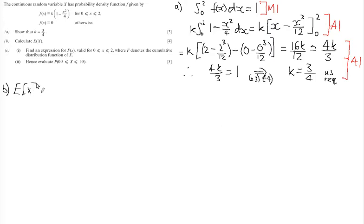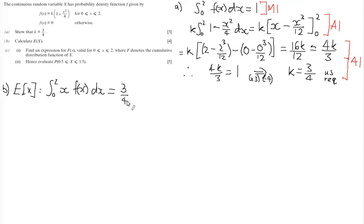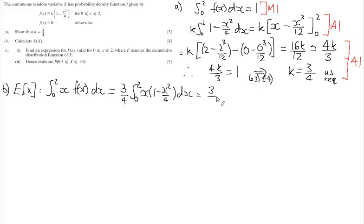Part B wants us to calculate the expectation of X. The expectation of X is found by integrating x multiplied by f(x) between 0 and 2 with respect to x. I'll take the constant k = three quarters outside the integral to simplify the process, integrating x times (1 minus x squared over 4).